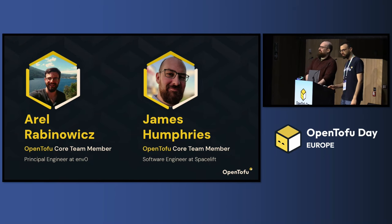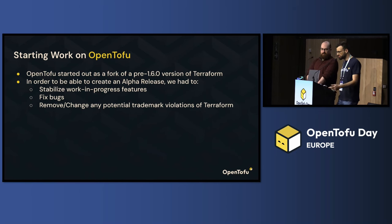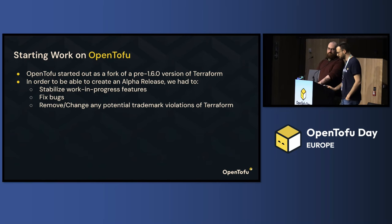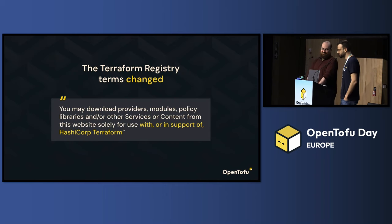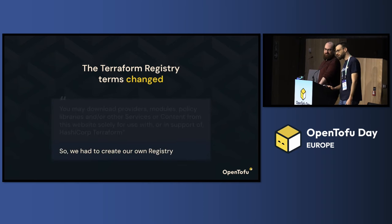We started off as a fork of Terraform, some pre-1.6.0 version of it. We had to stabilize work-in-progress features like the testing feature, fix some bugs and crashes, and remove a lot of potential trademark violations of Terraform. We found out that the Terraform registry changed its terms of service — it can only be used with or in support of HashiCorp Terraform. We are not HashiCorp Terraform, so we're in a bit of a pickle. We had to create our own registry.